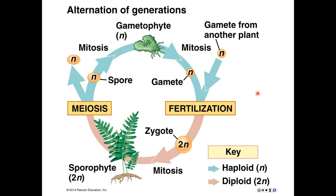On the boundaries of the diagram we have meiosis and fertilization, because those are the two processes that bring us from diploid back to haploid in the case of meiosis, or from haploid back to diploid in the case of fertilization.